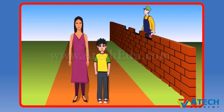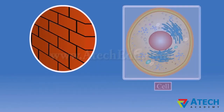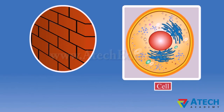Today we were told in class that cells are basic structural units of an organism. You are correct. Look at that man — he is building a wall with bricks. Similarly, cells are assembled to make the body of an organism. As a brick is the basic unit of a wall, similarly a cell is the basic unit of life.